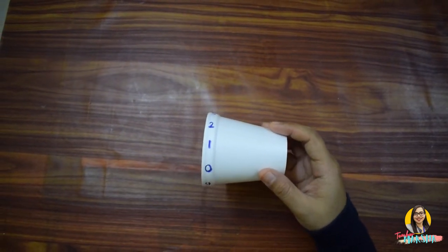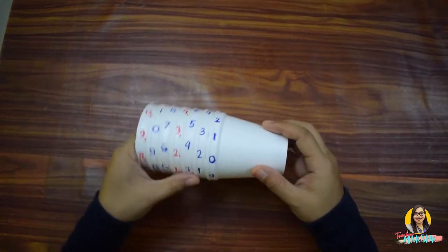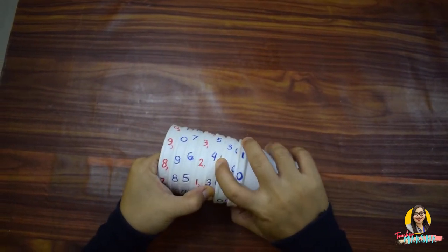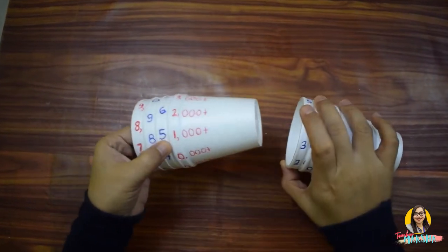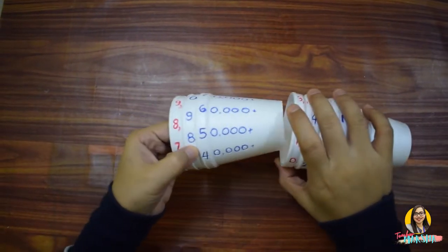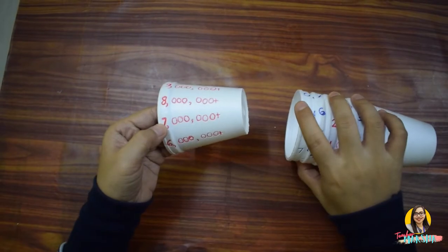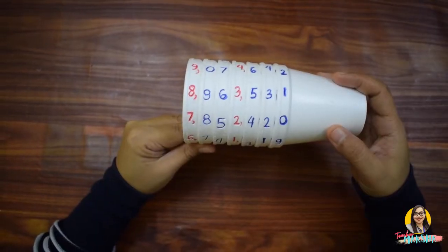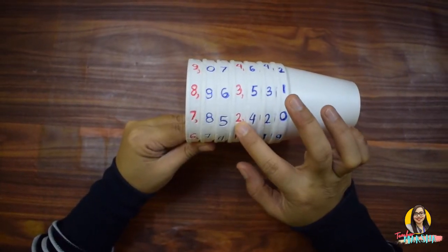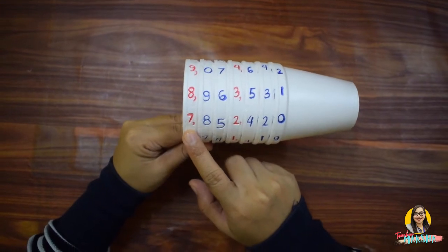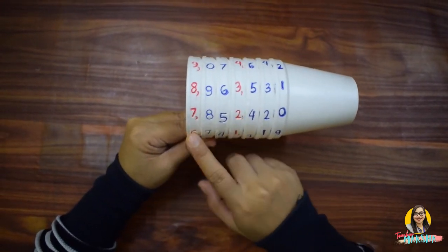you have to repeat the same procedure with tens, hundreds, thousands, ten thousands, hundred thousands, and millions. You will notice that I use red pen for thousands and millions for your students to easily recognize them.